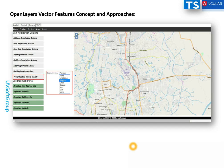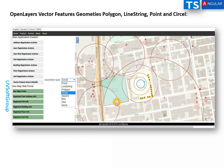Flow registration — we will talk about that. This is the basic page one and you can see one example where I select different geometries like polygon, line string, point, and circle. I've already drawn the polygons.